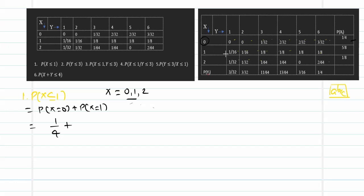P(X = 1) is 5/8. So we have 1/4 + 5/8. Using the calculator and pressing the A B/C button, the decimal gets converted to a fraction, and the answer is 7/8.